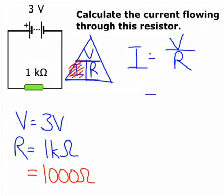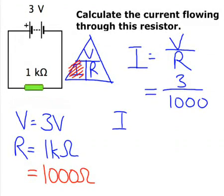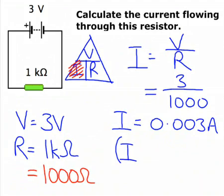Now let's substitute these values into our equation. V over R is 3 divided by 1000, so our current is 0.003 amps. And we could write this as I equals 3 milliamps.